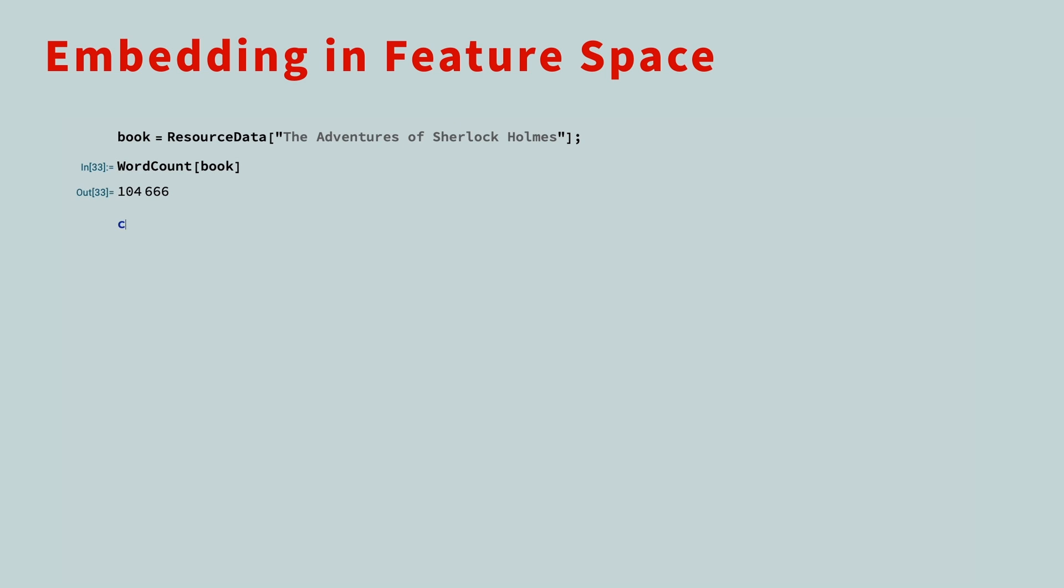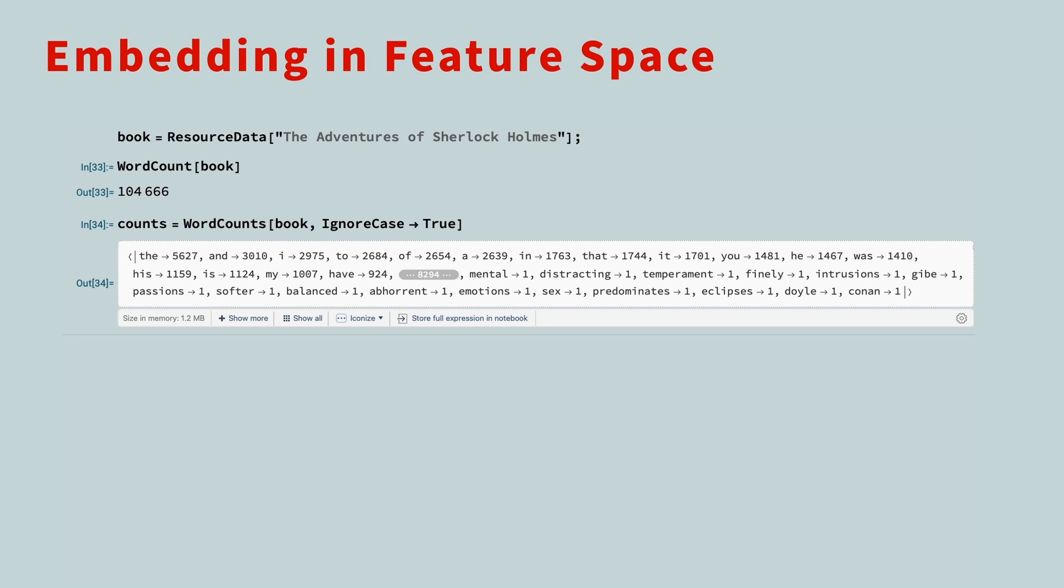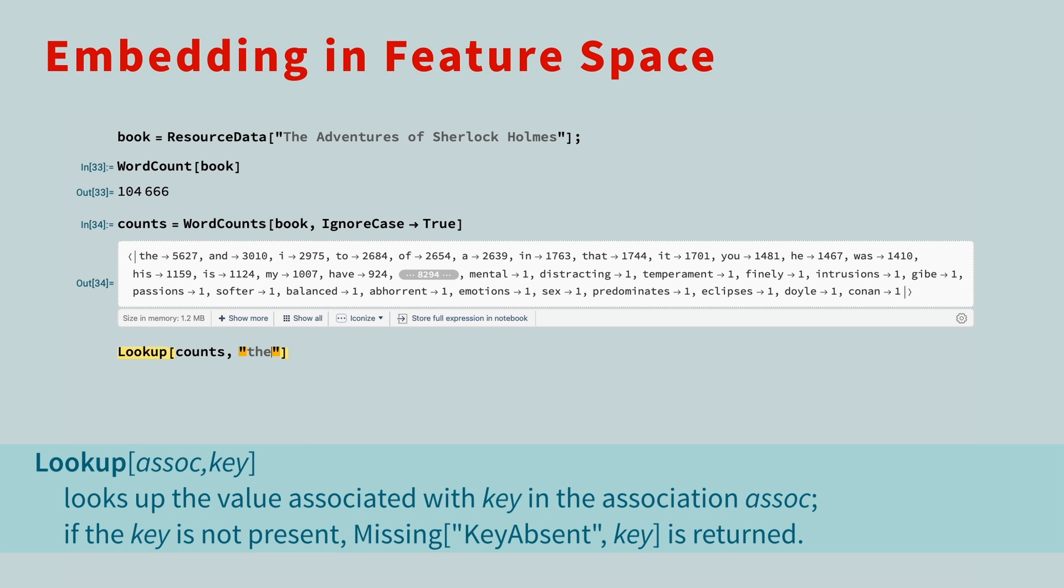First, let's construct the bag of words by counting how often each word appears. When we're doing this, we'll ignore letter case. For the next step, we'll take the list of the 100 most commonly used words and replace each word with how often it occurs in the book. If we look up how many times the appears, we get 5,627.